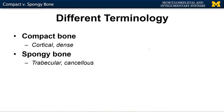Before we get into that, I want to talk about terminology. Anatomy, a lot of times, has many different names for the same thing. So if you ever read a different textbook, I want you to be familiar with the different terms that can be used. When we're talking about compact bone, sometimes you can hear it referred to as cortical or dense bone.